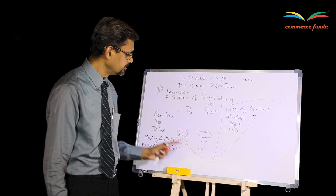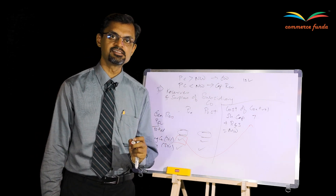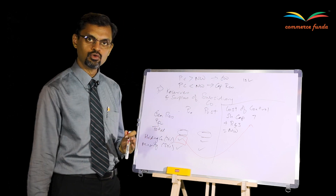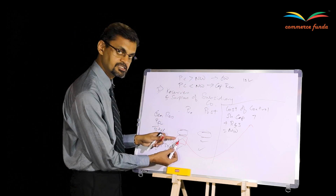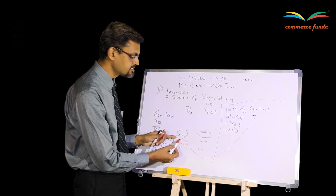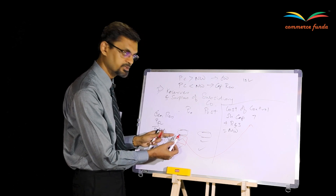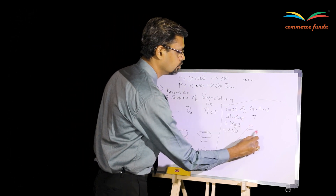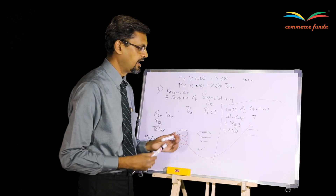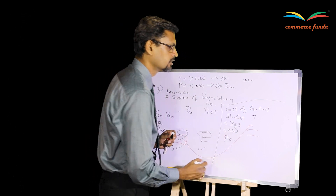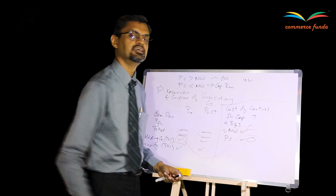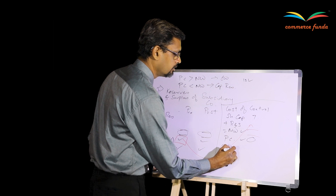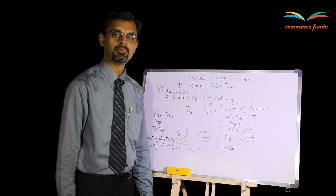For reserves and surplus in the second working note, simply take the pre-acquisition number from your first working note — you don't need to recalculate it. The question of goodwill or capital reserve arises only at the time of taking over the other company, so only the pre-acquisition reserves and surplus belonging to the parent company are relevant here. The total of share capital and pre-acquisition reserves gives net worth; compare that against purchase consideration to determine goodwill or capital reserve.